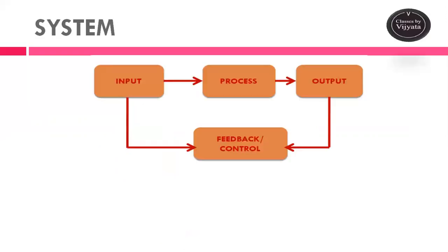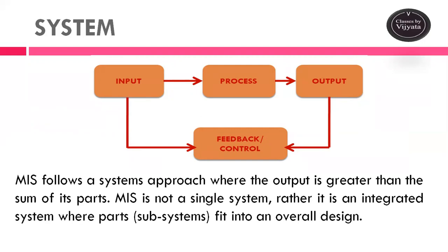After information, the third component in Management Information System is 'system.' MIS is basically a system because here we convert input into output through processing, and from this output we also derive feedback or a control mechanism. MIS always follows a system approach. The system approach means combining different components so that the combined output — as a single system — is greater than the sum of its individual parts.